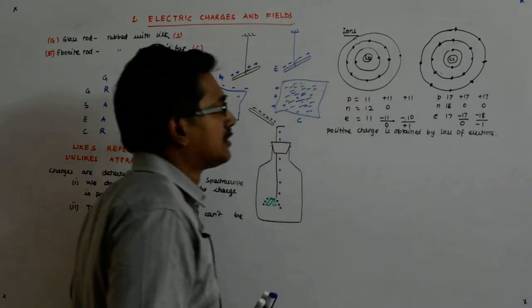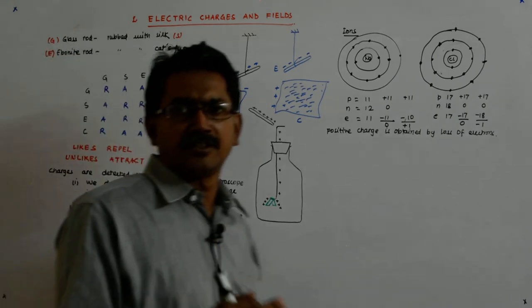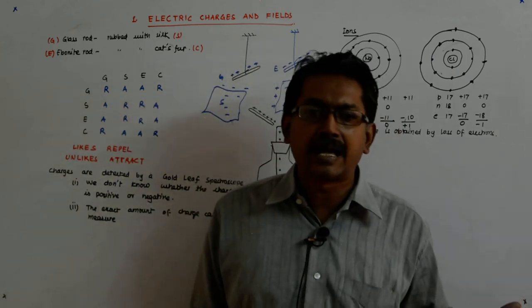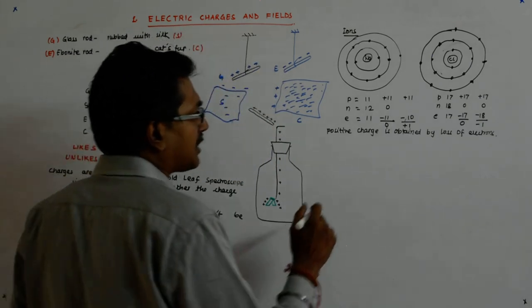It is only the transfer of electrons. Even a positive charge is being caused by an electron, just the mere absence of it. So positive charge is obtained by loss of electrons, and a negative charge is caused by...